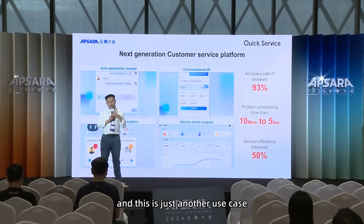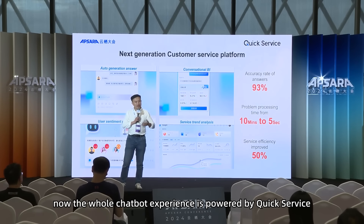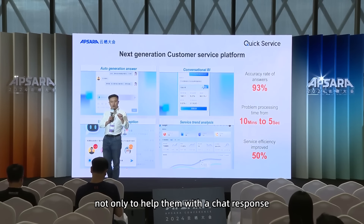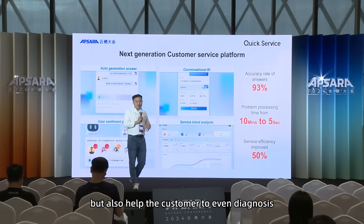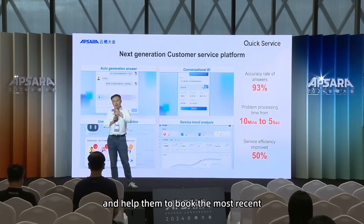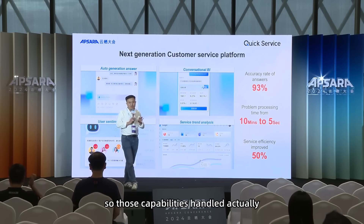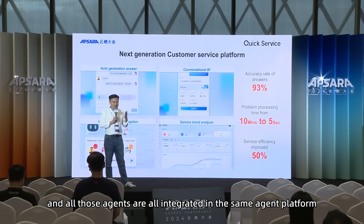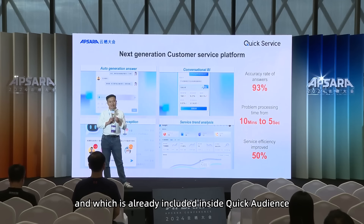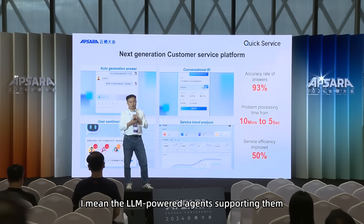Another use case: we are working with an auto company to reinvent how their APP looks. When you click in the APP, the whole chatbot experience is powered by Quick Service. We are using a multi-agent methodology — not only to help with chat responses, but also to help customers diagnose potential maintenance issues with their car, and to book the most adjacent 4S car dealer shops for maintenance. Those capabilities are handled by different agents, all integrated in the same agent platform inside Quick Service. To the customer, it's just one smooth user journey with multiple LLM-powered agents supporting them.